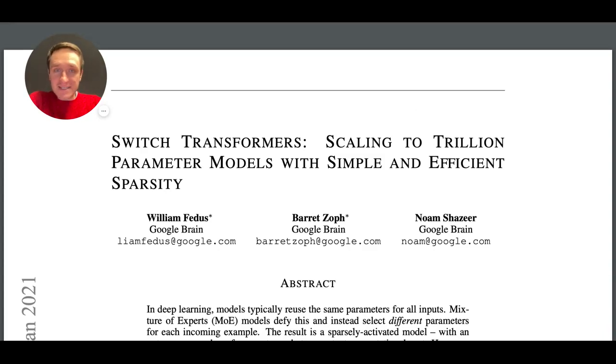Hi. Just a couple of days ago, Google released a paper called Switch Transformers: Scaling to Trillion Parameter Models with Simple and Efficient Sparsity.